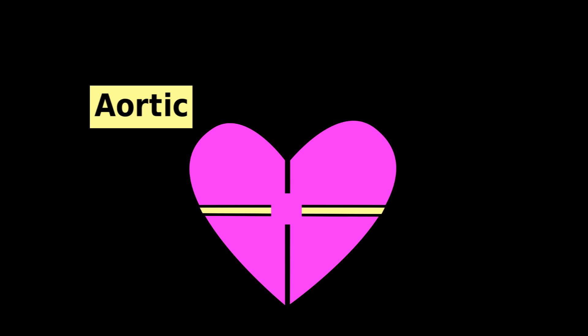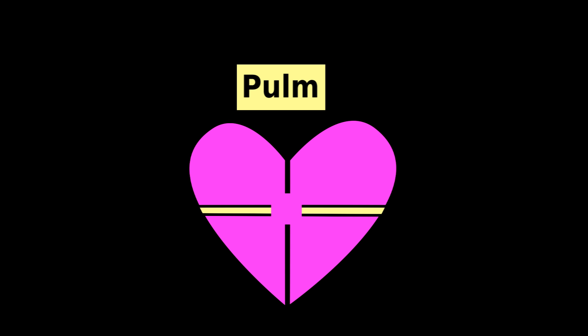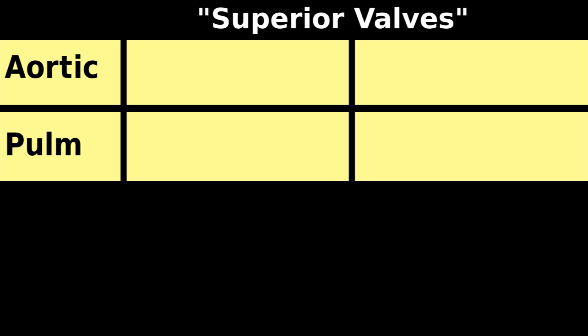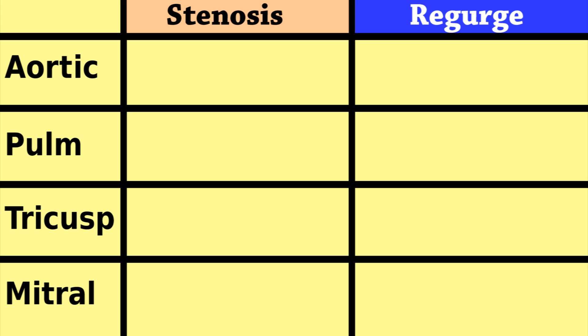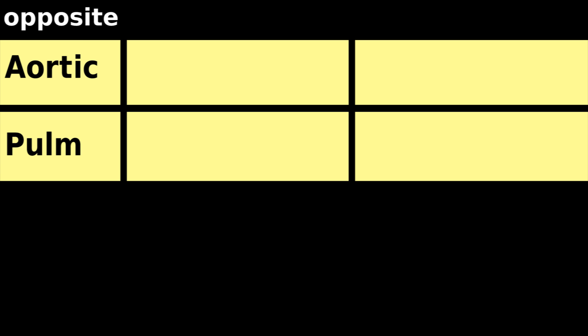The aortic valve is the last heart valve before blood gets pushed far to the head. The pulmonic valve is the last heart valve before blood gets pushed far through the lungs. These are the superior valves. These groupings help because stenosis is like the opposite of regurgitation, and the superior valves are like the opposite of the bottom valves.